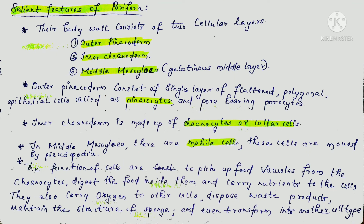The salient features of Porifera: their body wall consists of three cellular layers — outer pinacoderm, inner choanoderm, and middle mesoglea. The mesoglea is a gelatinous, separate layer. We will discuss a profile of Porifera translated into four key points about its salient features.